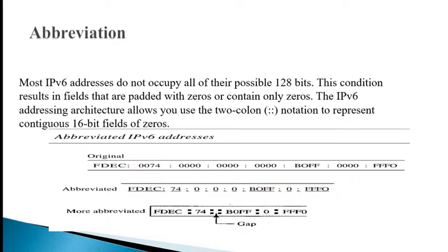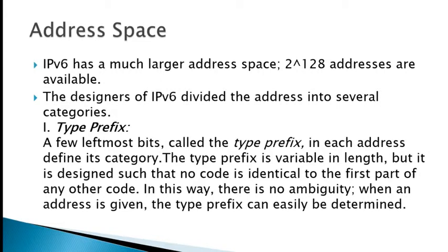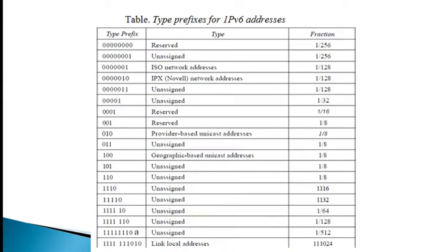IPv6 has a much larger address space — 2 to the power 128 addresses are available. The design of IPv6 divides the address into several categories. The types are defined by a type prefix, which is variable in length but designed such that no code is identical to the first part of any other code. In this way there is no ambiguity when an address is given. A table shows the prefix for each type of address and the fraction of each type related to the whole addressing space.